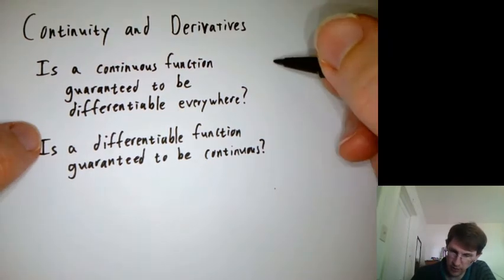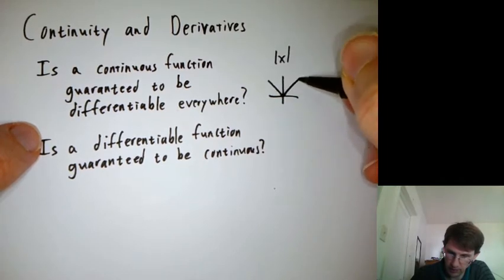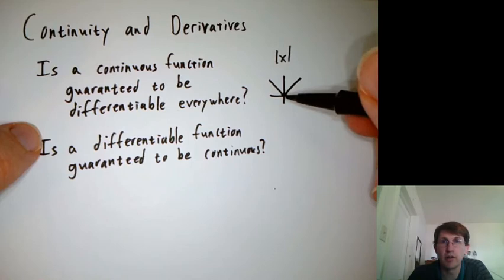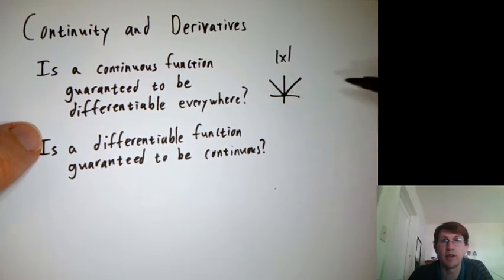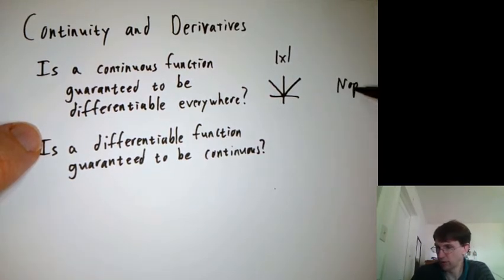So one quick thing to think about here is absolute value of x. What does that look like? Something like this. It is continuous, but it doesn't have a derivative at the origin, so just being continuous is not enough to guarantee differentiable everywhere. So I'll put a nope there.